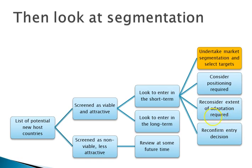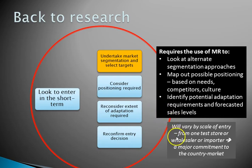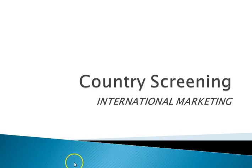We then do the segmentation — there's a video on that — consider possible positioning, and assess to what degree we need to adapt our products. After we've done those three things, we go back and recheck — it's a numbers game. Once we've got the strategy required, we can recheck that decision. We probably need to go back to more market research; there are different ways of positioning and different segmentation approaches, so we have to map it all out. That's basically scoring models and country screening.